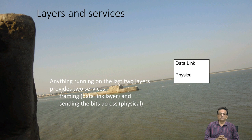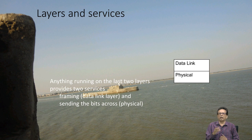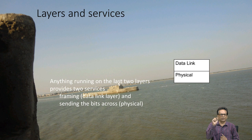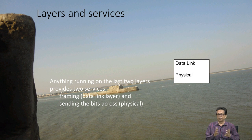Remember what is the job of these two layers. Anything running on the last two layers provides two different services — a wired card, wireless card, or whatever, even when you use a mobile phone there is a small adapter which does both. First, it is called sending the bits across in the form of signals, which is the job of the physical layer.